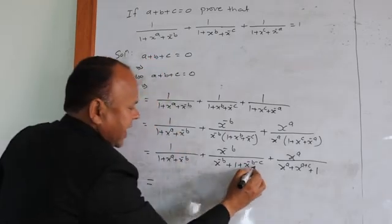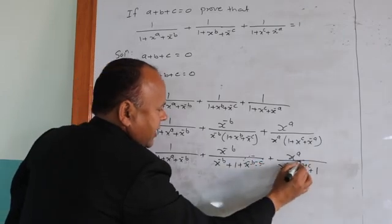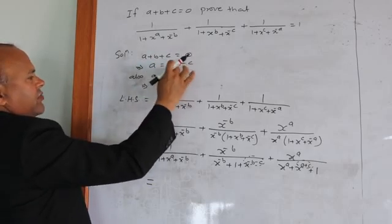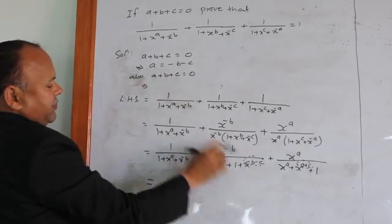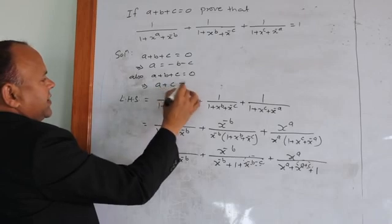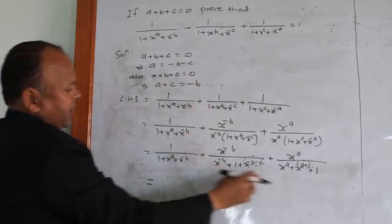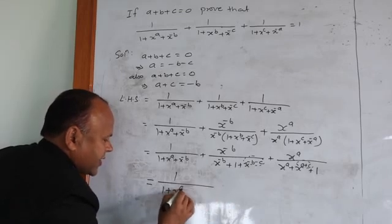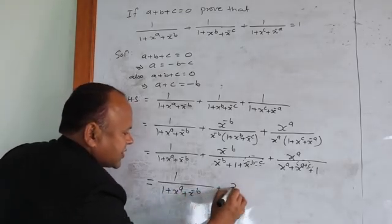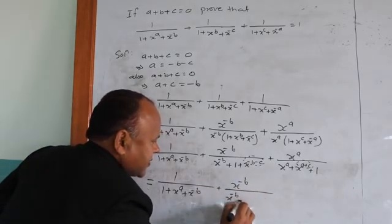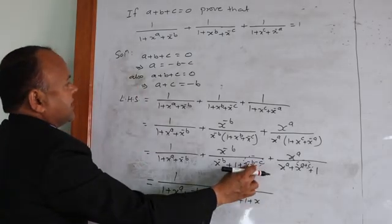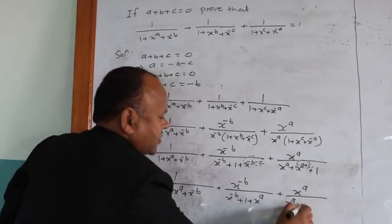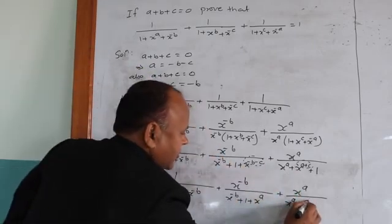From a plus b plus c equals 0, we will find the values of minus b minus c and a plus c. Since a plus b plus c equals 0, transposing b and c gives a equals minus b minus c. So instead of minus b minus c we substitute the value a. Also, a plus c: transposing b gives a plus c equals minus b. So instead of a plus c we put minus b. Let us substitute these two values: we get 1 upon 1 plus x^a plus x^(minus b), plus the second term where minus b minus c becomes a so we have x^a, plus the third term where a plus c becomes minus b, giving minus b plus 1.